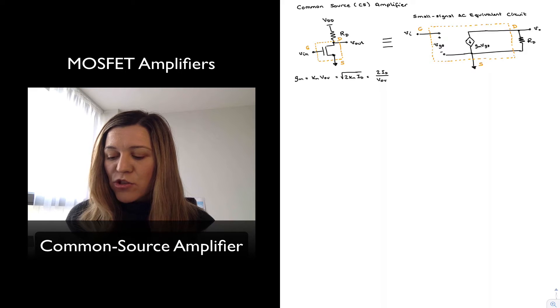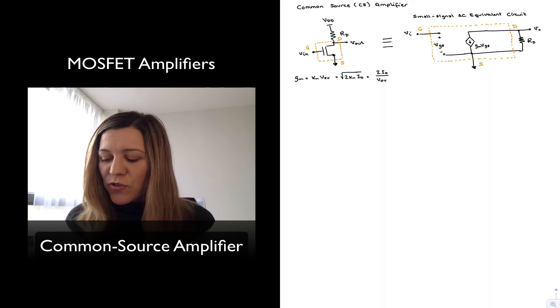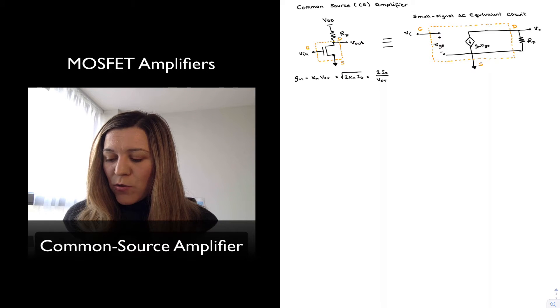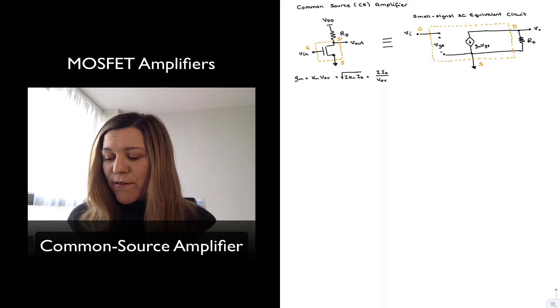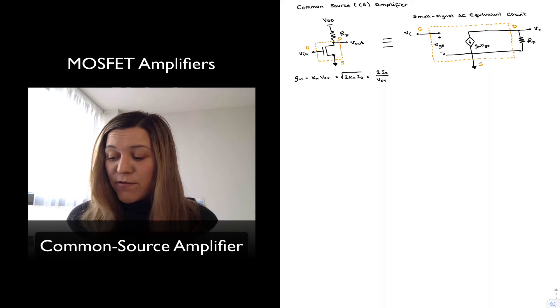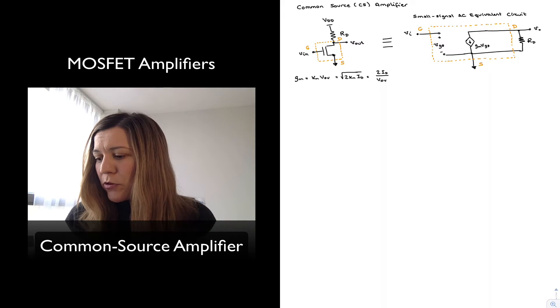And just as a reminder, GM is the transconductance of the MOSFET, which we can calculate using different equations depending on what values of parameters we have. Very often we're going to have to use the last expression 2ID over VOV because that's calculable depending on the Q bias point, but not always.